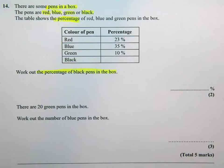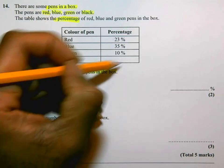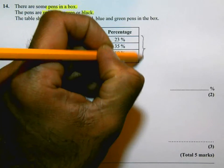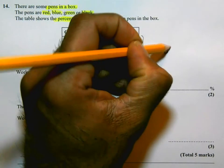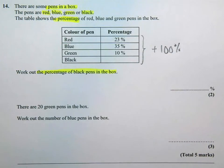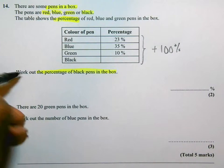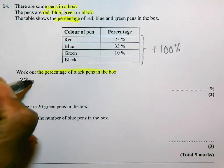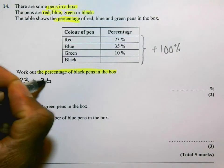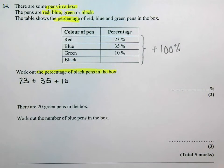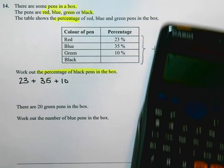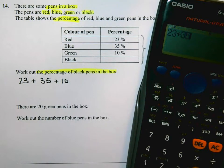these percentages should add up to 100%. So what I'm going to do is I'm going to add the percentages there. 23 add 35 add 10. Okay, so 23 add 35 add 10 equals 68%.